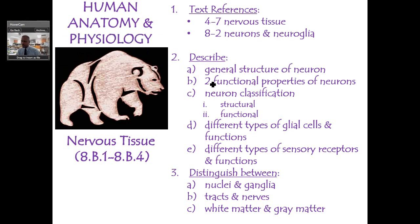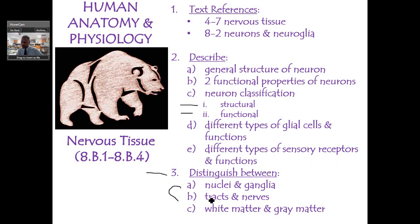In this video, I want to make sure I talk about the functional properties of neurons — their structure and function. Then we'll look at the receptors, and hopefully have time to talk about the neuroglia, the nuclei, the tracts and nerves, and what the difference is between those.